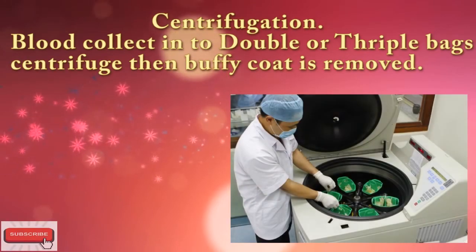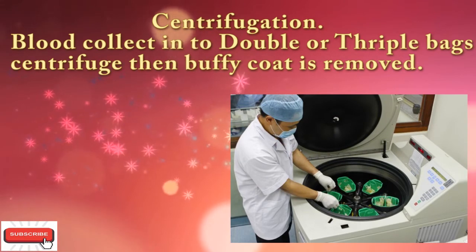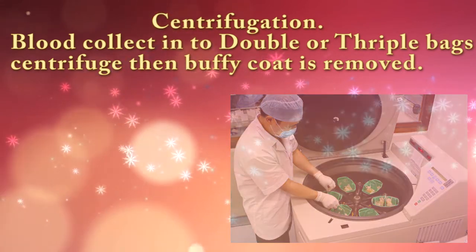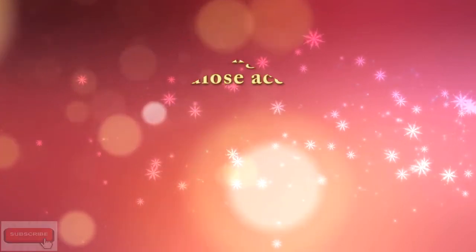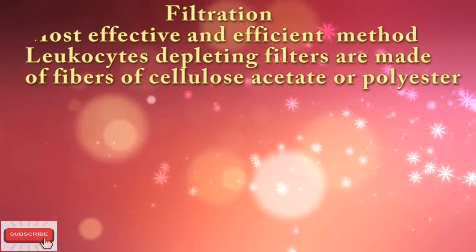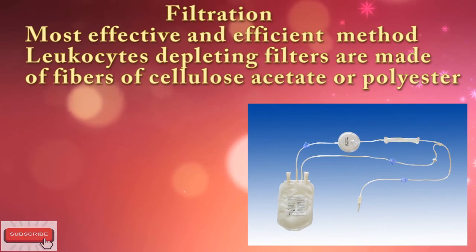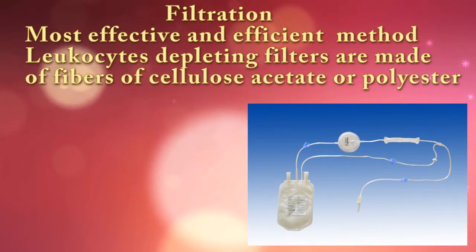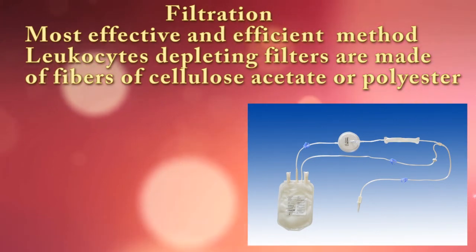In centrifugation, blood is collected into double or triple bags, centrifuged, and then the buffy coat is removed. Filtration is the most effective and efficient method. Leucocyte-depleting filters are made of fibers of cellulose acetate or polyester.